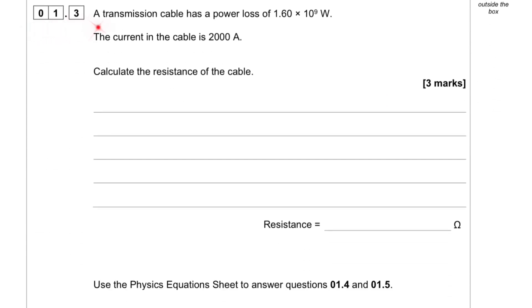Question 1.3. A transmission cable has a power loss of 1.6 times 10 to power 9 watts. The current in the cable is 2000 amps. Calculate the resistance of the cable.